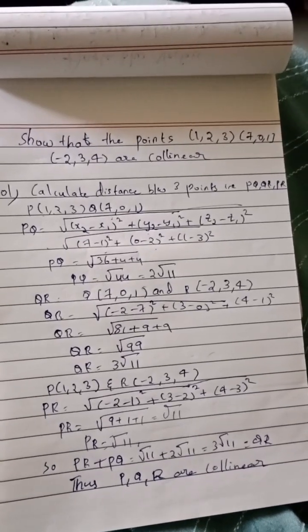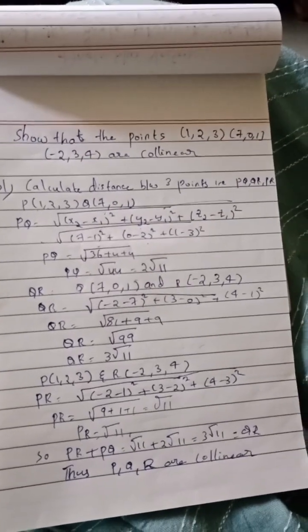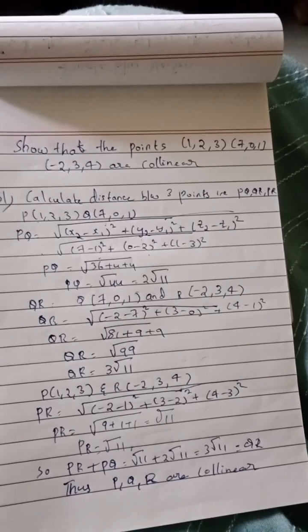The formula is (x2 minus x1) whole square plus (y2 minus y1) whole square plus (z2 minus z1) whole square.